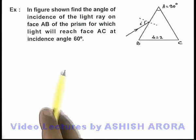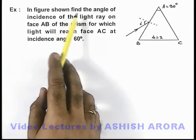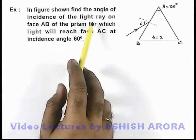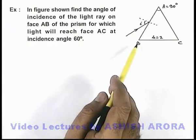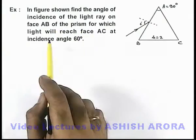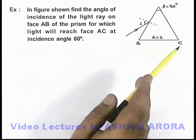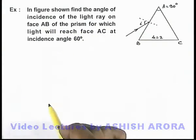In this example, we are given that in the figure shown, we are required to find the angle of incidence of the light ray on face AB of the prism for which the light will reach face AC at an angle of incidence 60 degrees.